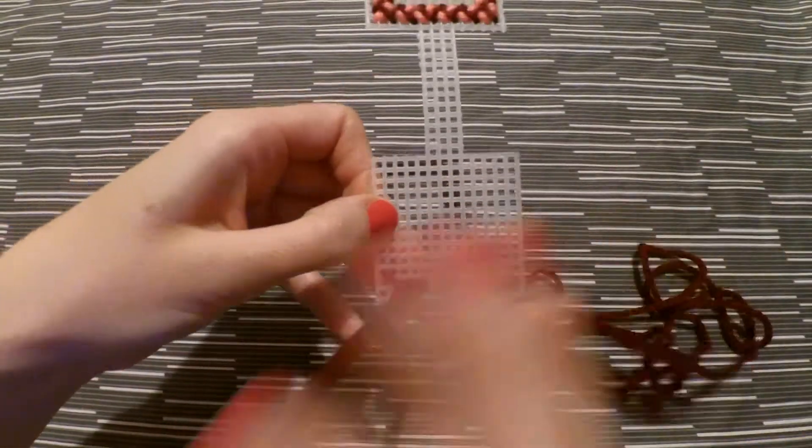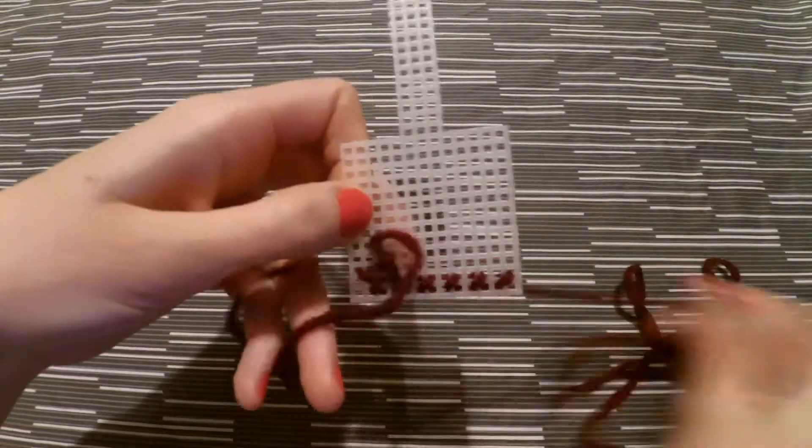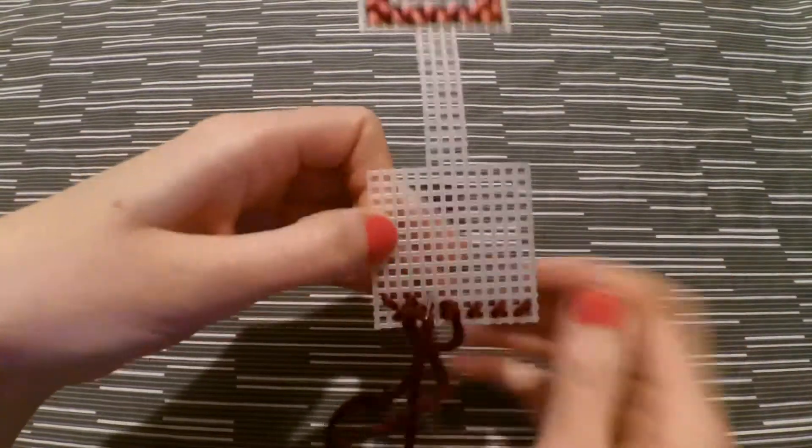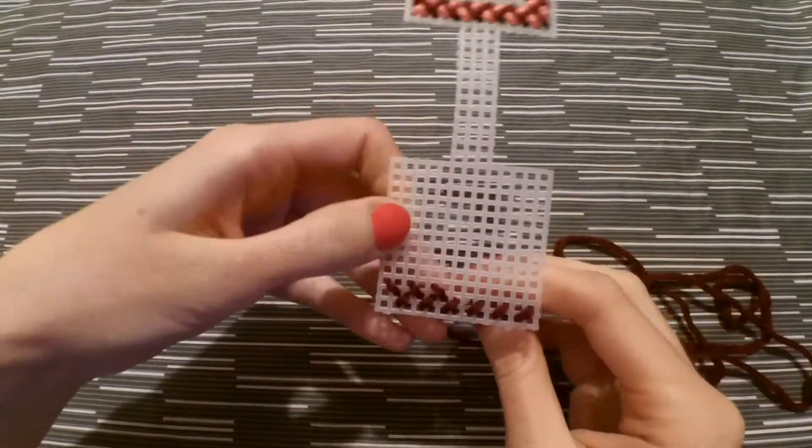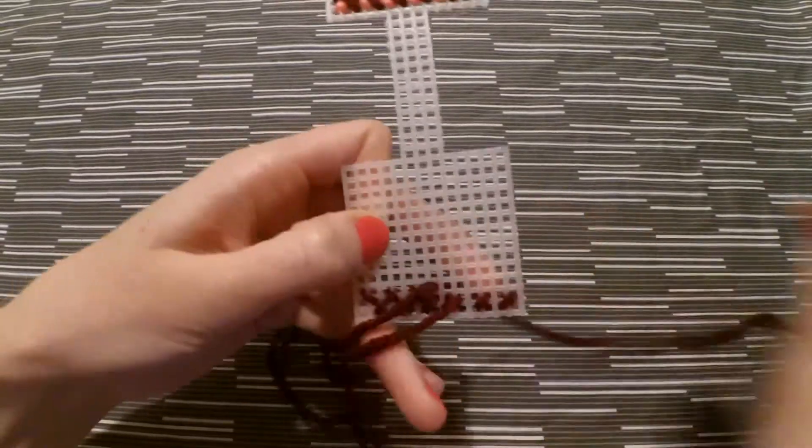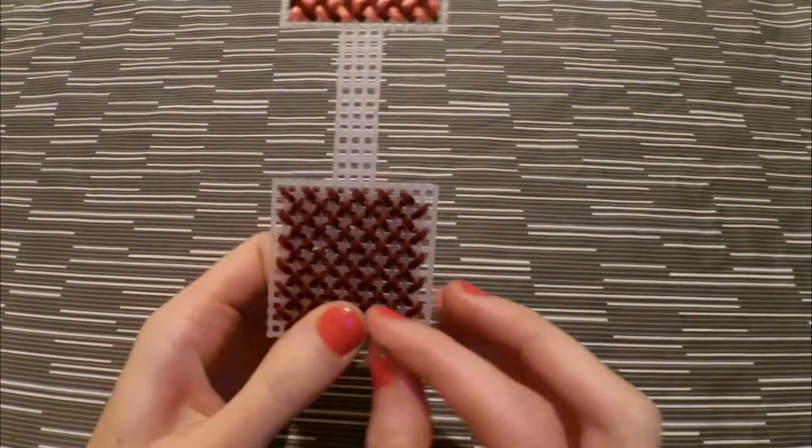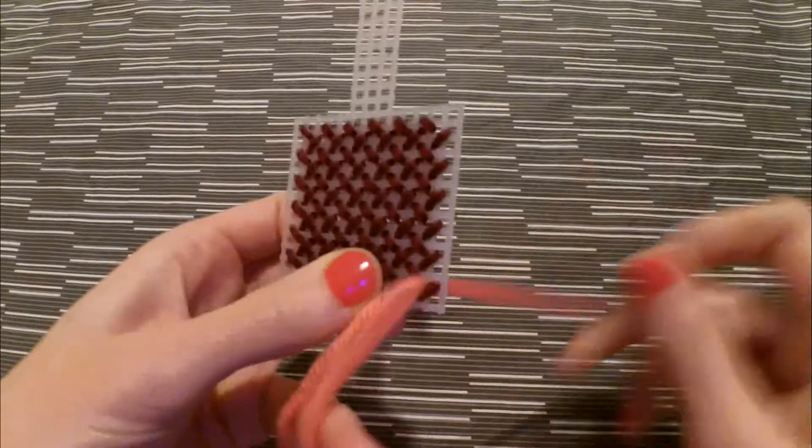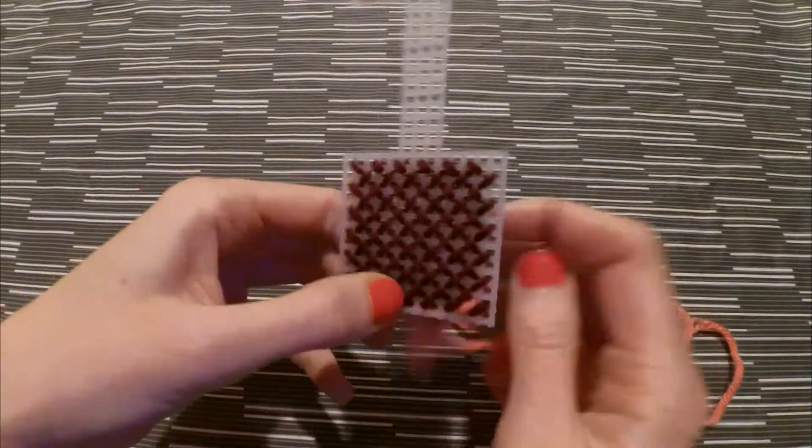Then on the second row you're going to angle your stitches towards the left and you're just going to alternate between those two all the way up to the top. And then once again you're going to fill in the empty spaces with the next color.